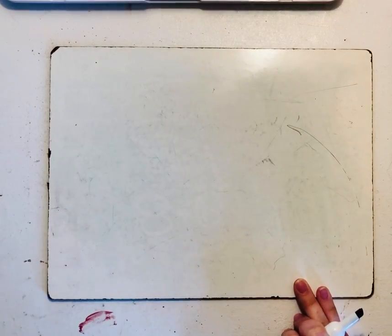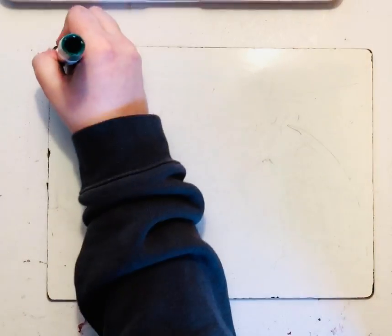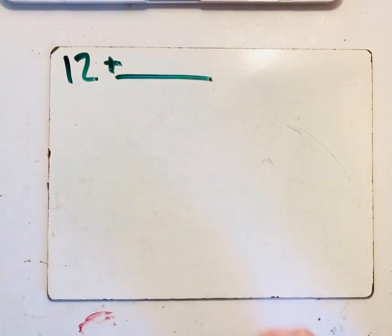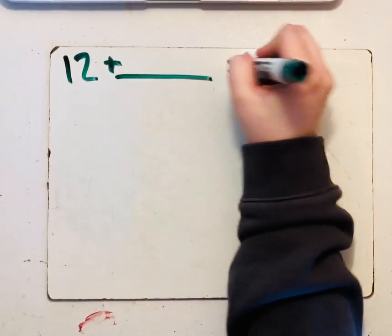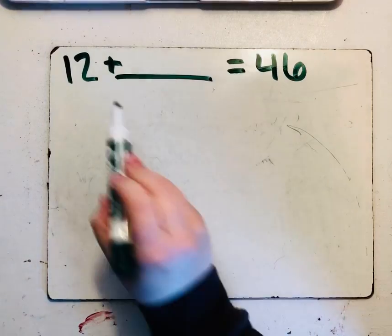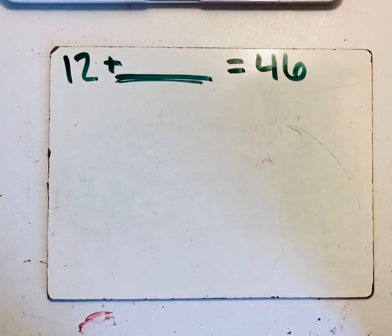Let's go on to the medium daily word problem. It says that there are 12 ducks in the pond. Some join them. And there are now 46 ducks in the pond. So we are trying to find how many ducks join them.